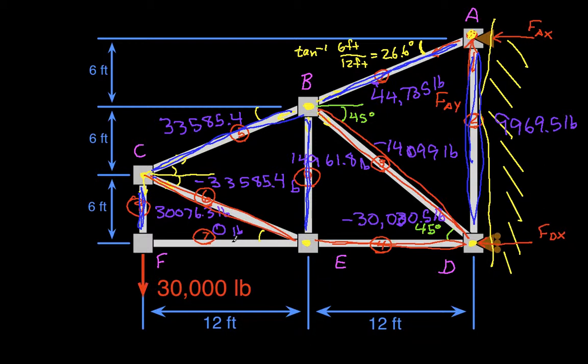Basically, what this means is that this member is not applying any force, which makes sense. If I look at joint F, it has a member going up and a force going down. And so if member 7 is pulling it to the side, it can't be in equilibrium because there's nothing to pull it back in this direction.